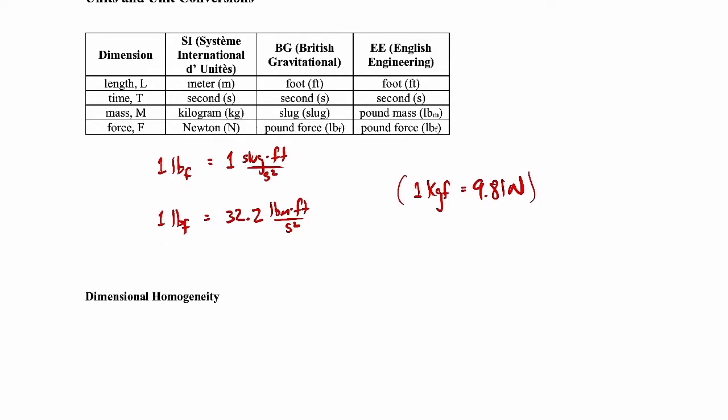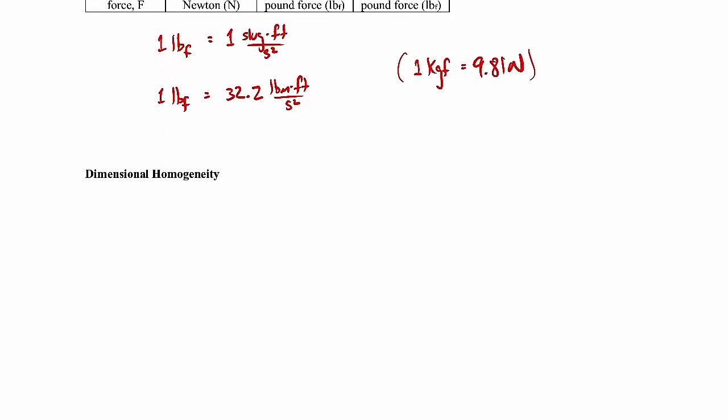Okay so let me talk next about dimensional homogeneity. The idea here is that you can't add apples and oranges. If I gave you 10 kilograms plus 20 degrees Celsius equals 30 newtons, that doesn't make any sense at all. Even though you have the magnitudes correct, 10 plus 20 equals 30, the units don't make any sense. This is the concept of dimensional homogeneity.